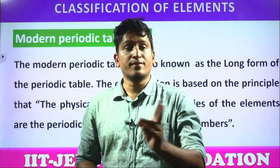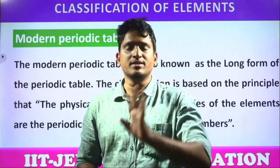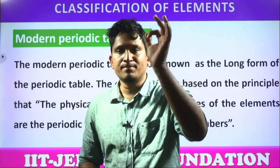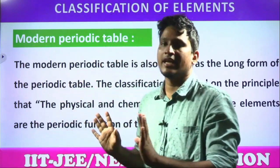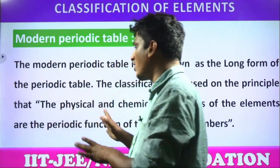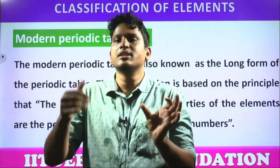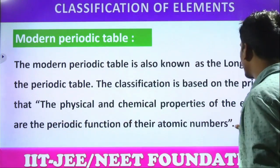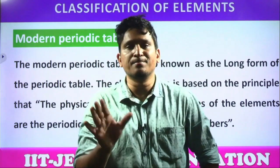This is not possible. Different elements can have the same mass, but no two different elements can have the same atomic number. So atomic number is the best way to classify the elements. The law states: the physical and chemical properties of the elements are the periodic functions of their atomic numbers.